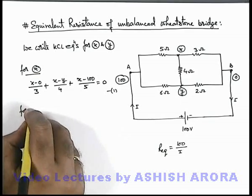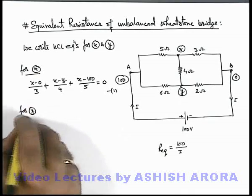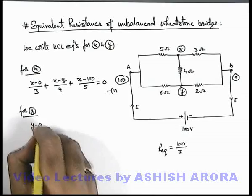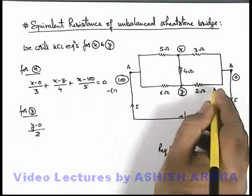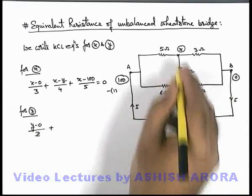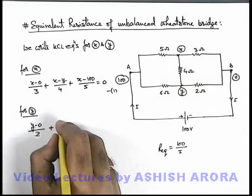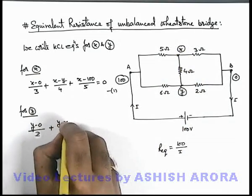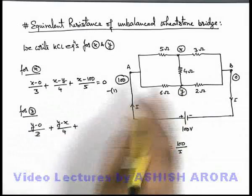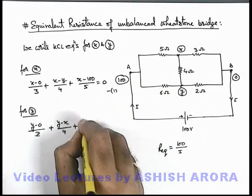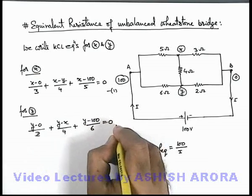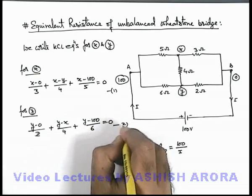Similarly, if we write the KCL equation for junction Y, this can be written as (Y minus 0) by 2 — the current through the 2 ohm resistance by Ohm's law — plus the current going from Y to X through the 4 ohm resistance will be (Y minus X) by 4, plus through the 6 ohm resistance from Y will be (Y minus 100) by 6. This should be zero, which is our equation number 2.